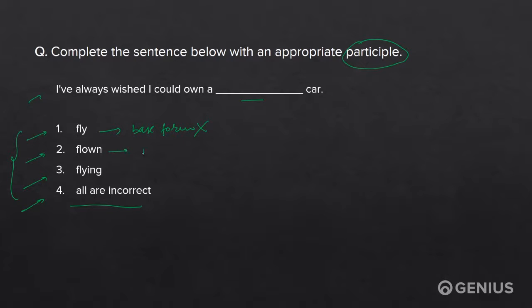The second option, flown, is a past participle. Let's put it in the sentence: I've always wished I could own a flown car. Does this make sense? No, so this option is also incorrect.